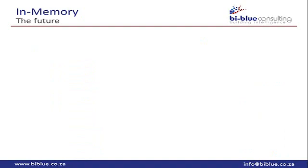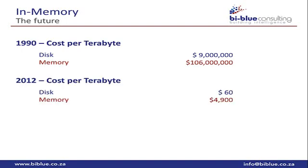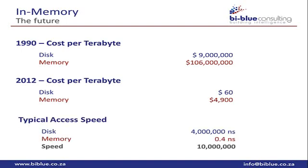SAP has indicated that in-memory is the solution to this problem. Memory has been around for some time, but why were solutions disk-based? In 1990, the cost per terabyte of disk was much cheaper than memory — it was the most logical choice at the time. Fast forward to 2012: the cost per terabyte has dropped significantly. Disk is still slightly cheaper, but we are now at a point where using memory instead of disk is viable.